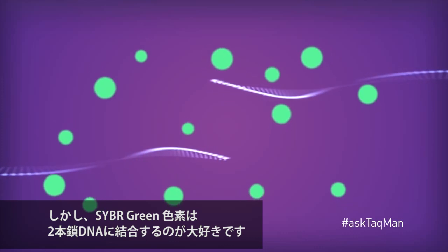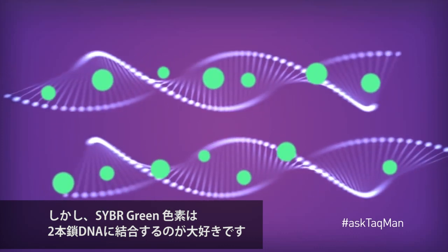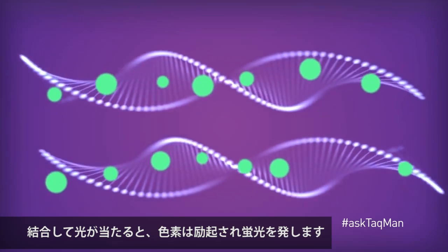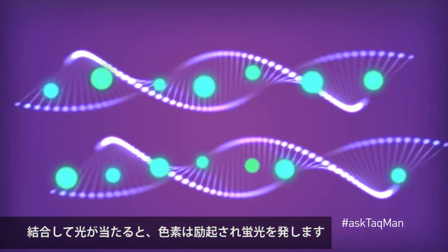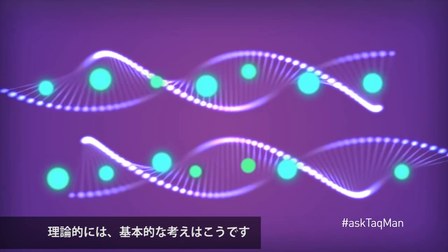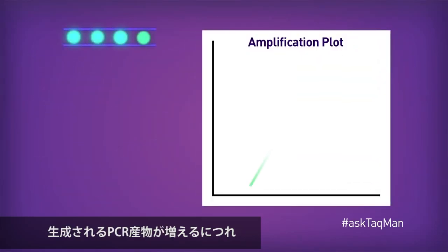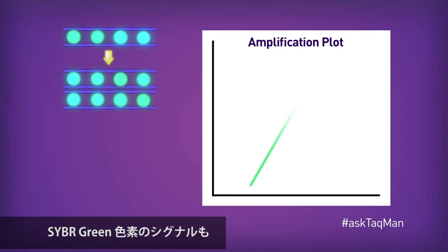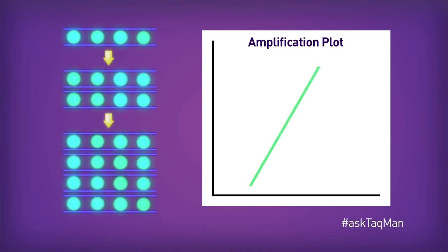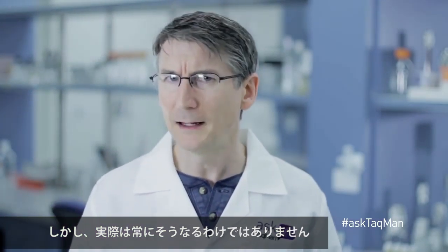SYBR Green dye really likes to bind to double-stranded DNA, and when it does and you hit it with light, the dye gets excited and fluoresces. At least in theory, the basic idea is that as PCR creates more and more product, the signal of SYBR Green dye goes up proportionally. In practice, though, this doesn't always happen.